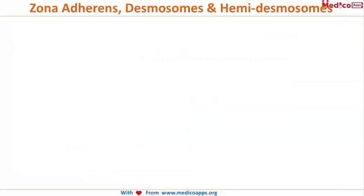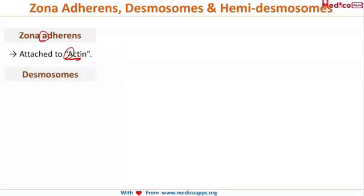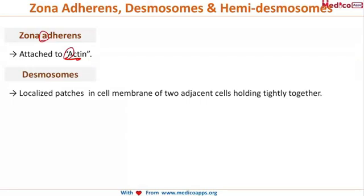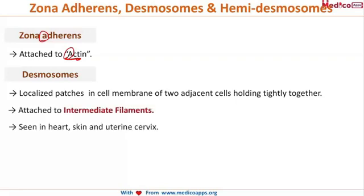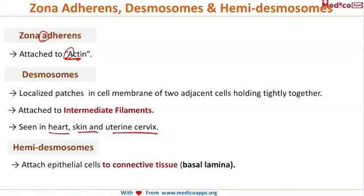Zonula adherens is attached to actin — remember: adherens 'A', actin 'A'. Desmosomes are localized patches in the cell membrane between two cells that hold them tightly together; they are attached to intermediate filaments and are seen in the heart, skin, and uterine cervix. Hemidesmosomes help in attaching epithelial cells to the connective tissue, that is the basal lamina.